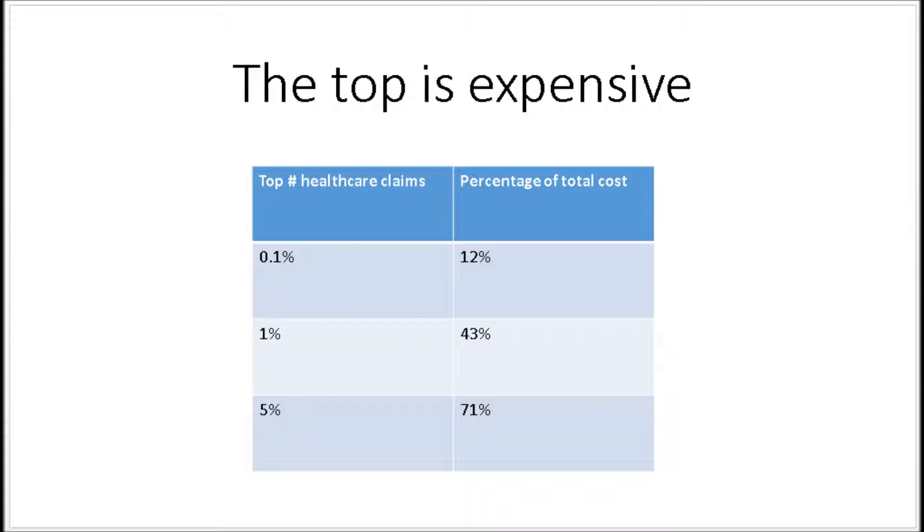As you can see, the insurance company pays out 12% of all claims to the top 0.1% of members, 43% of all claims to the top 1% of all members and 71% of all claims to just the top 5% of all members.